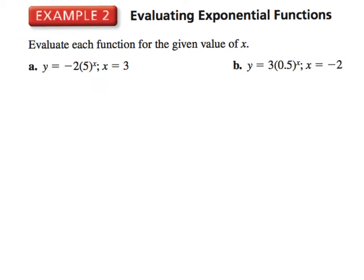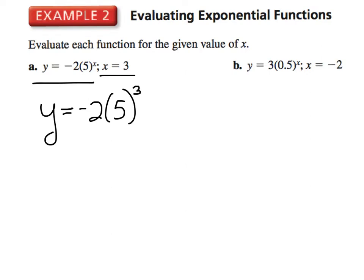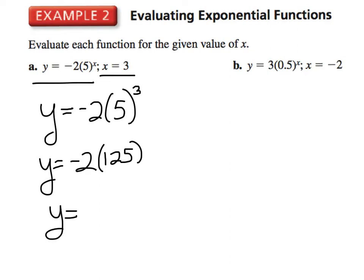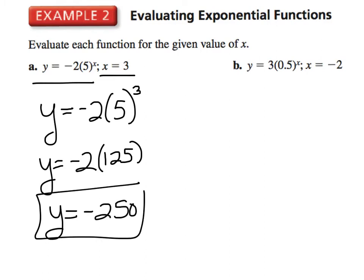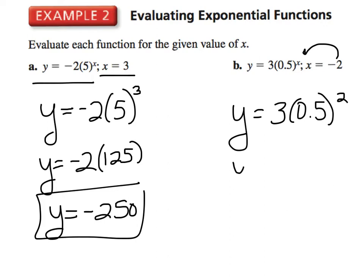Example 2 is quite easy — we're just going to evaluate each function for the given value. In A, we have y equals negative 2 times 5 to the x power, and x is 3. Remember to follow order of operations: take negative 2 times 5 to the third power. 5 to the third power is 125. Do not take negative 2 times 5 first. So your answer would be y equals negative 250. In B, plug in negative 2. You would get 0.5 to the negative second power, which equals 4. So your answer would be y equals 12.